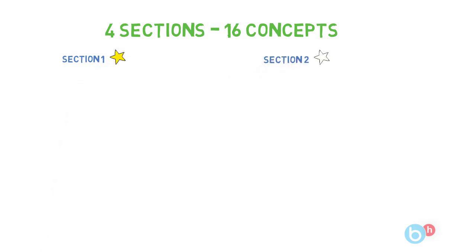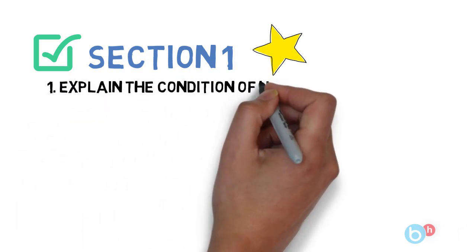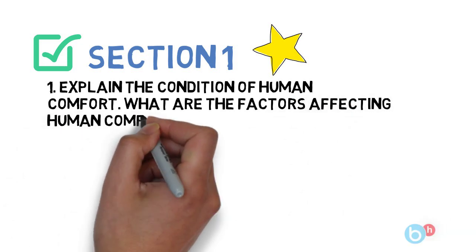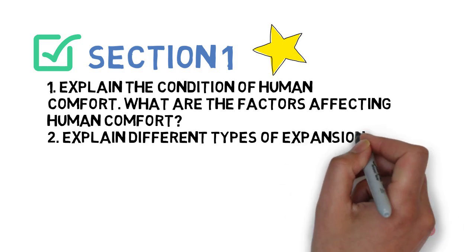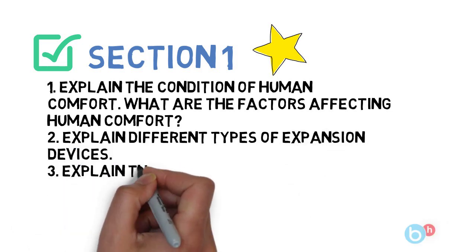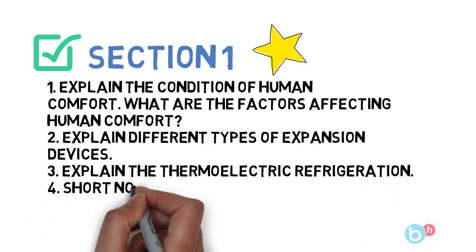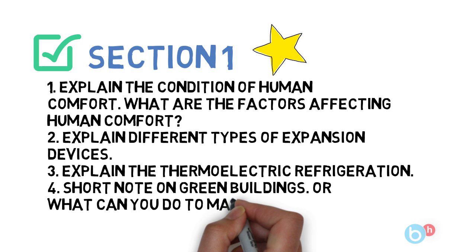And then you can go to section 3 and section 4. Talking about section 1, you have to do 4 questions. The first question is: explain the condition of human comfort and what are the conditions or factors affecting human comfort. Next question is: explain different types of expansion devices. Third is: explain the thermoelectric refrigeration. And the fourth one is: short note on green buildings or what can you do to make a building a green building.